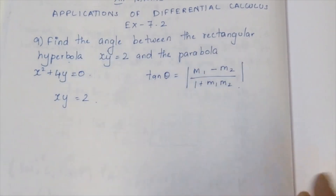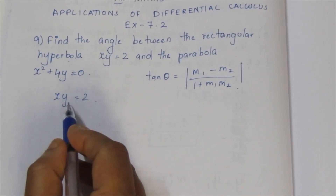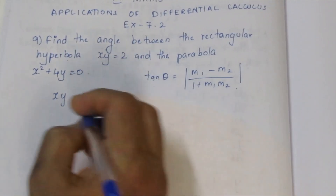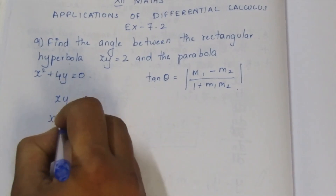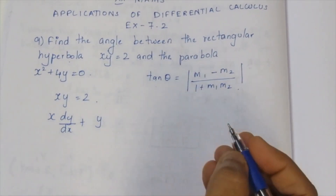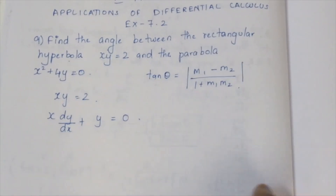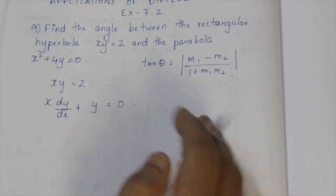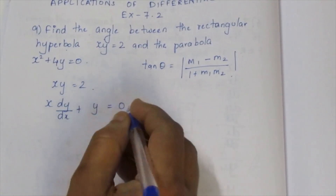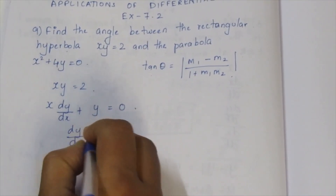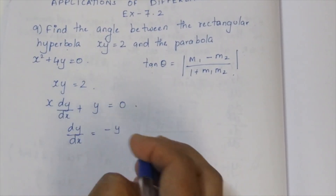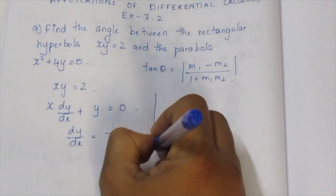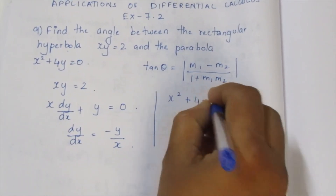For the rectangular hyperbola xy = 2, we differentiate implicitly. Differentiating: x·(dy/dx) + y·(1) = 0, so dy/dx = -y/x.